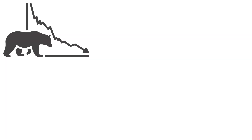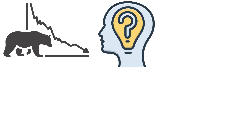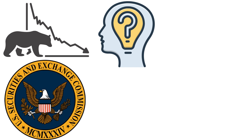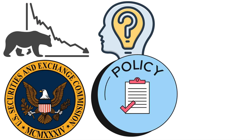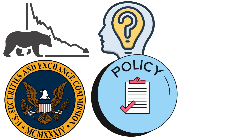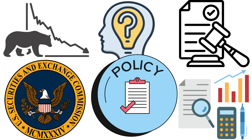The Wall Street Crash of 1929 left an indelible mark on the world. It reshaped economic thinking, leading to the establishment of regulatory bodies like the Securities and Exchange Commission (SEC) to prevent a similar catastrophe. Lessons learned from the crash influenced economic policies for decades, emphasizing the need for prudence and regulation in financial markets.